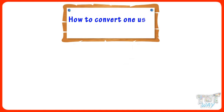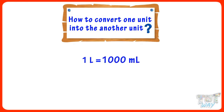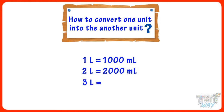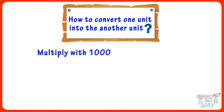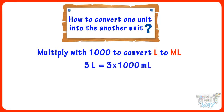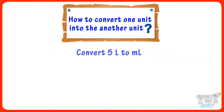Now let's learn how to convert one unit into the other. 1 liter equals 1000 milliliters. 2 liters equals 2000 milliliters. 3 liters equals 3000 milliliters. So we multiply by 1000 to convert liters to milliliters. 3 liters equals 3 multiplied by 1000 milliliters, so 3 liters equals 3000 milliliters.